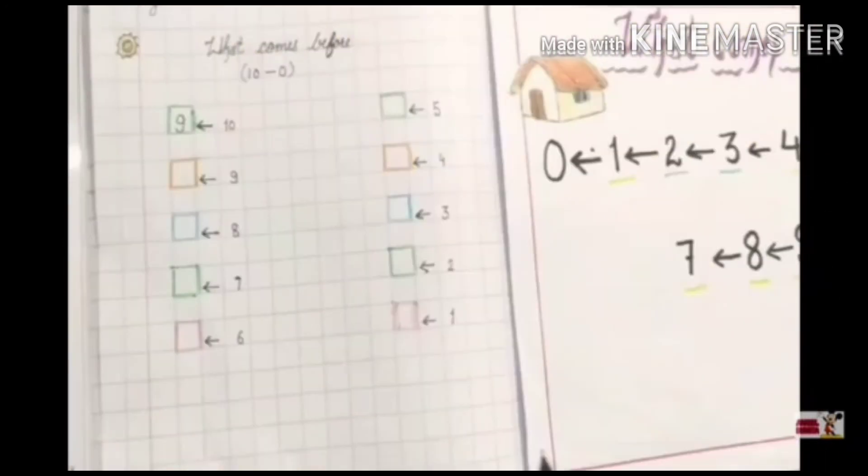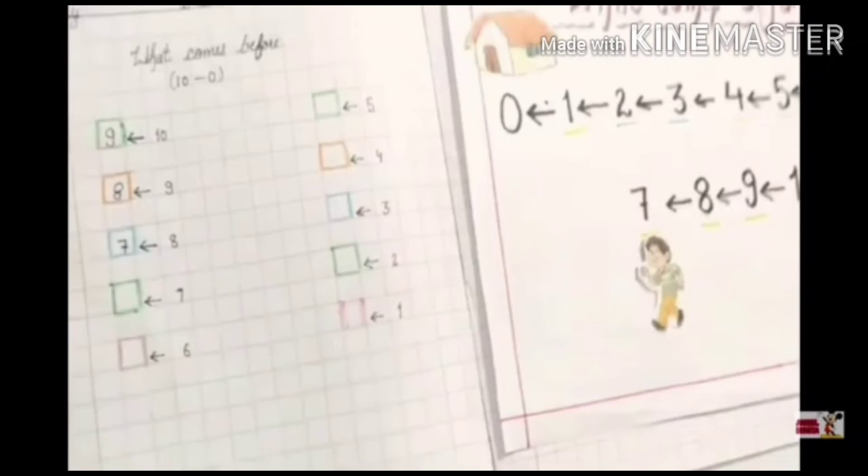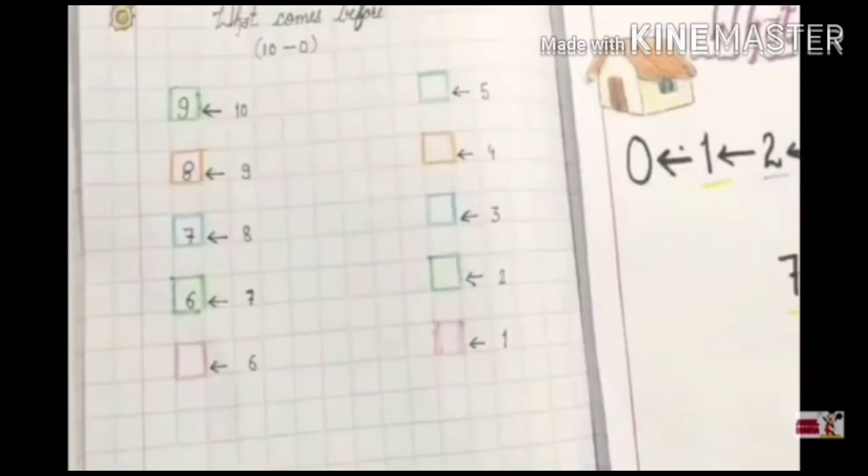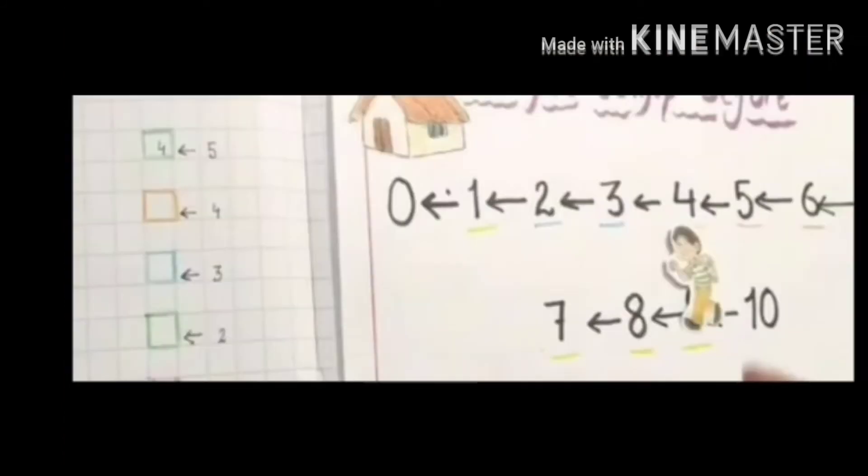So tell me, what comes before 10? It's 9. What comes before 9? It's 8. What comes before 8? 7. What comes before 7? 6. What comes before 6? It's 5. What comes before 5? It's 4.